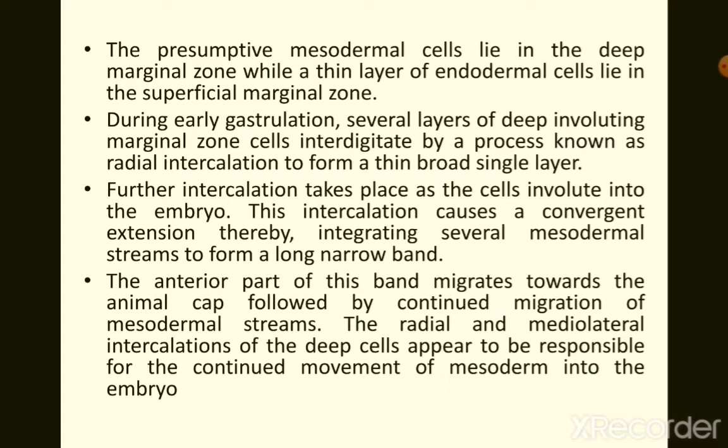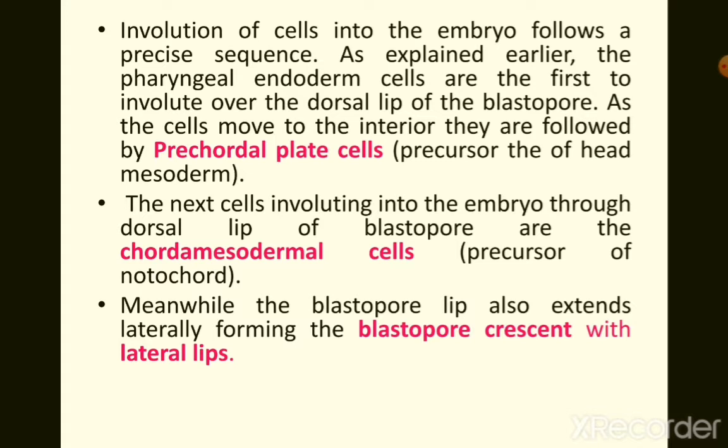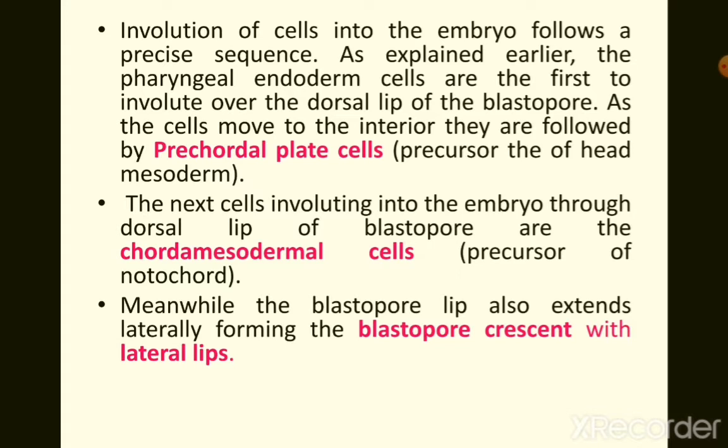Radial and mediolateral intercalations of deep cells appear to be responsible for the continued movement of mesoderm into the embryo. The involution of cells follows a precise sequence: pharyngeal endoderm cells are first to involute over the dorsal lip of the blastopore, followed by pre-cordal plate cells forming the precursor of the head mesoderm, and then chorda-mesodermal cells forming the precursor of the notochord.